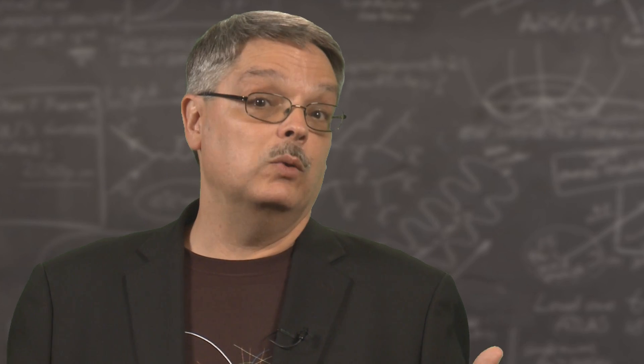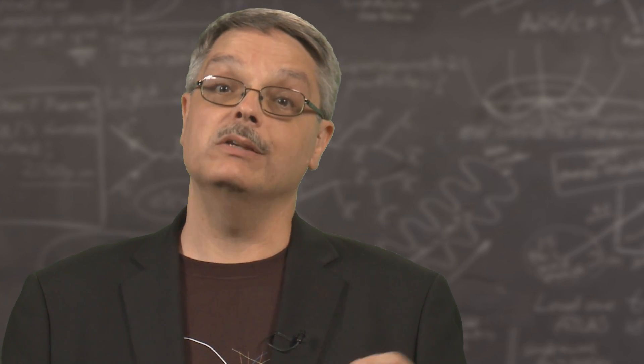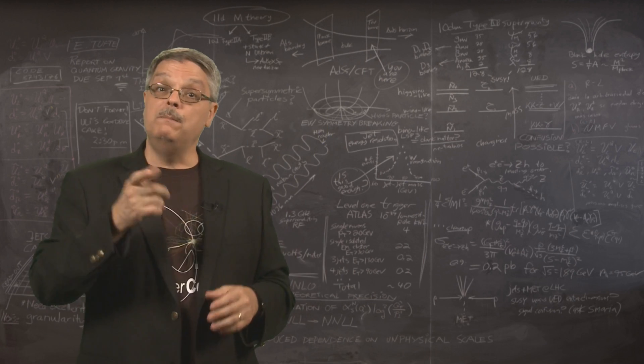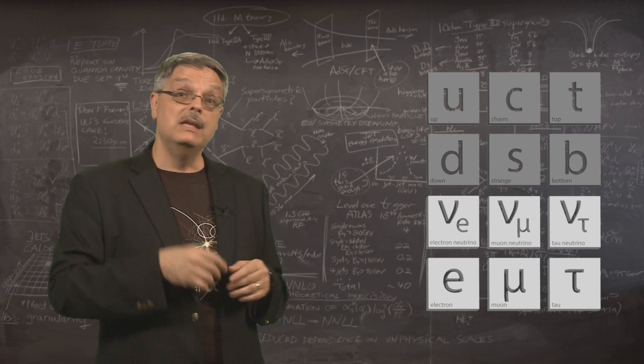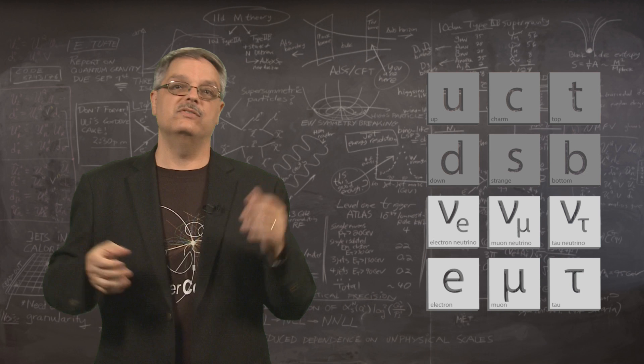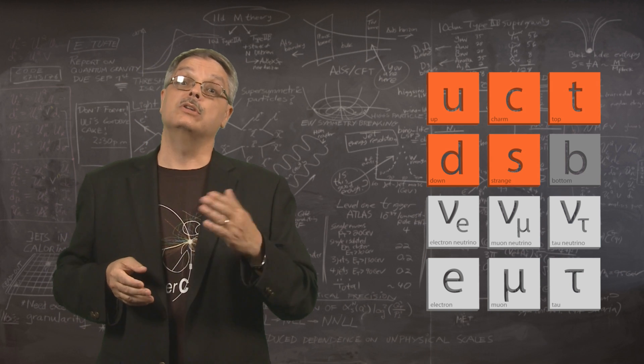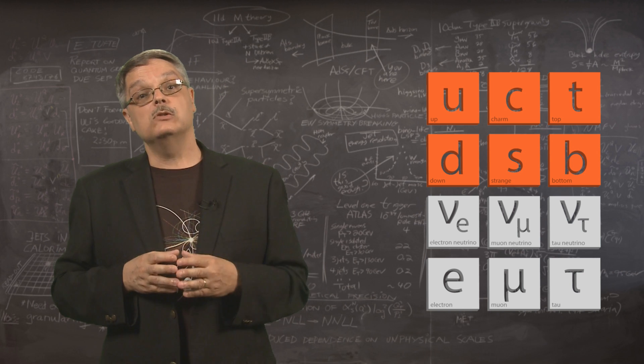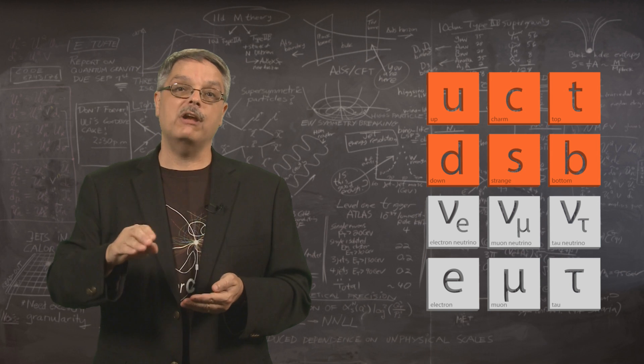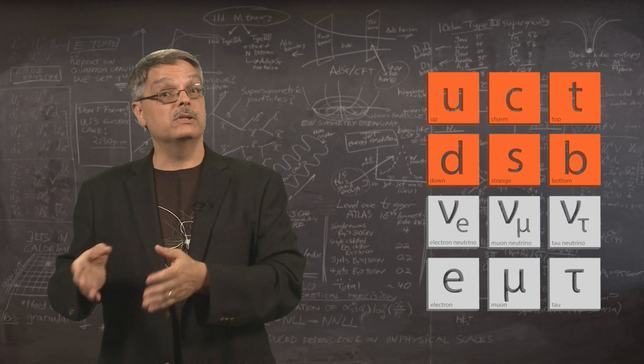So where do we stand? Are quarks and leptons the final word, or are they just a way station in our journey to find the smallest constituents of the universe? Well, what do we know? The picture off to my left embodies our current best understanding. There are six quarks with kind of silly names called up and down, charm and strange, top and bottom. The up and down quarks are found in ordinary matter, but the others are unstable, existing for only short fractions of a second before decaying, and found only inside particle accelerator collisions.